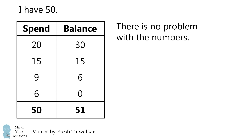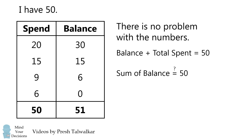Well, the reason is there's actually no problem with the numbers. The correct equation is that the balance plus the total amount spent will be equal to 50. It's not going to be true that the sum of the balance column will be equal to 50. Sometimes it will be, but in this case, it'll be equal to 51.